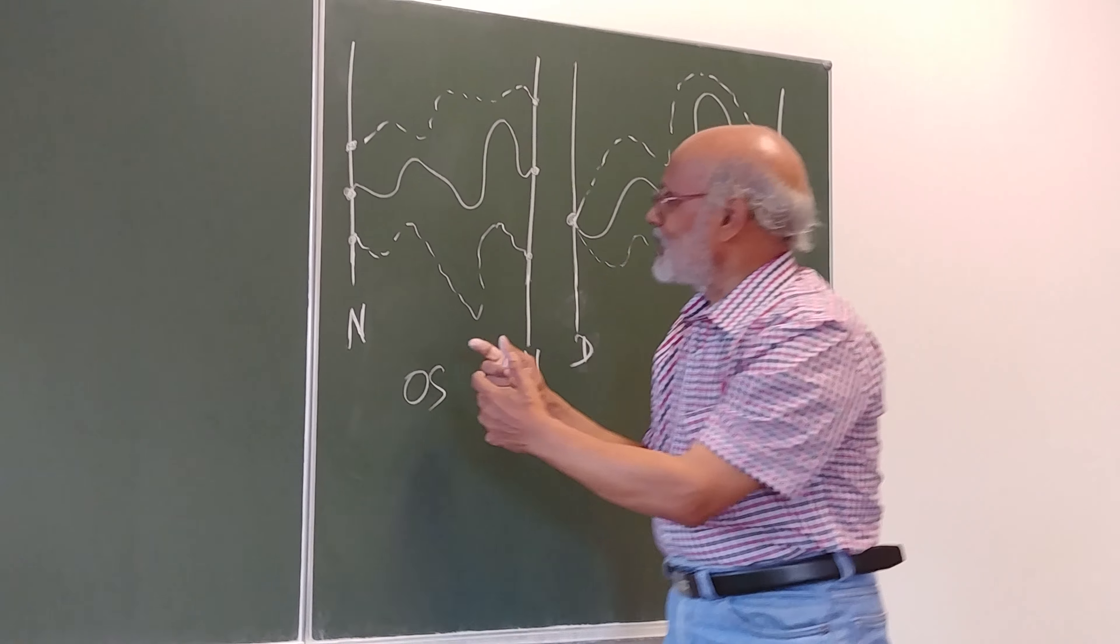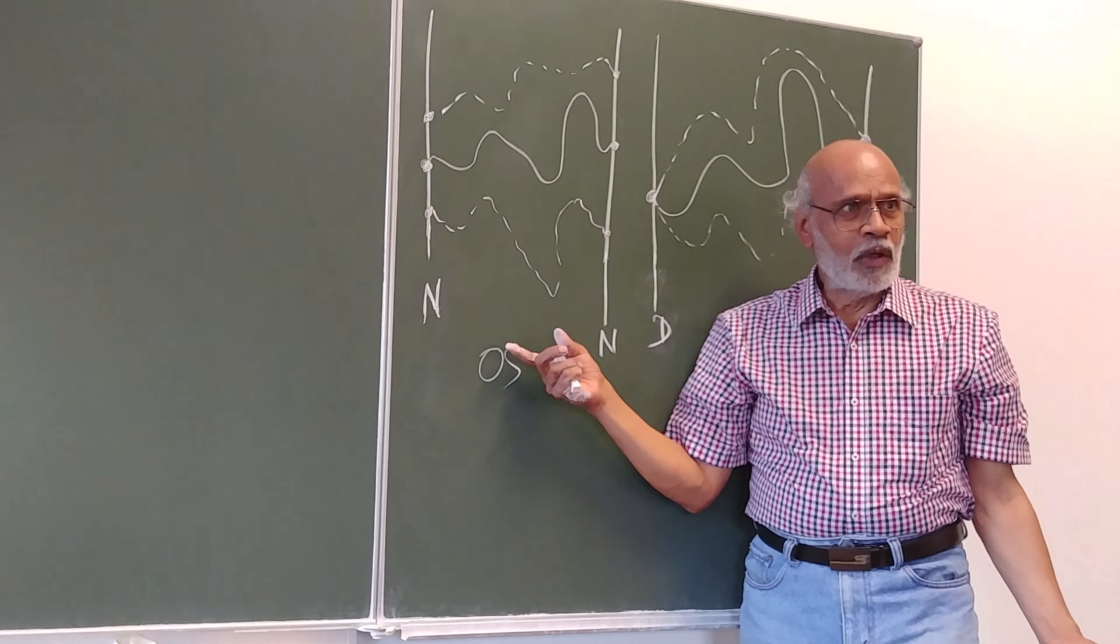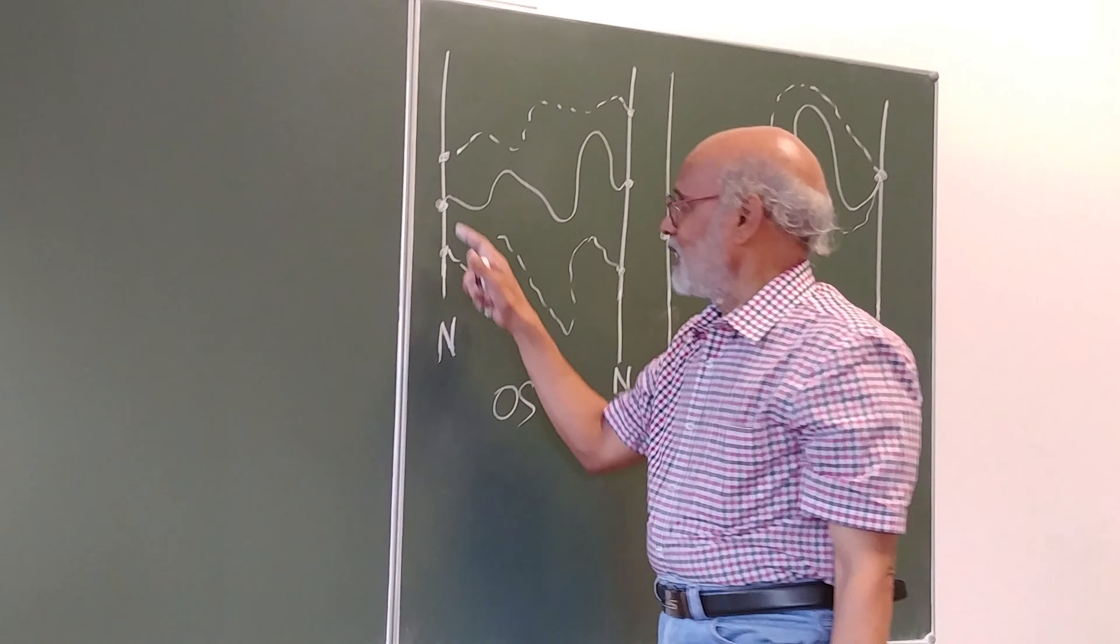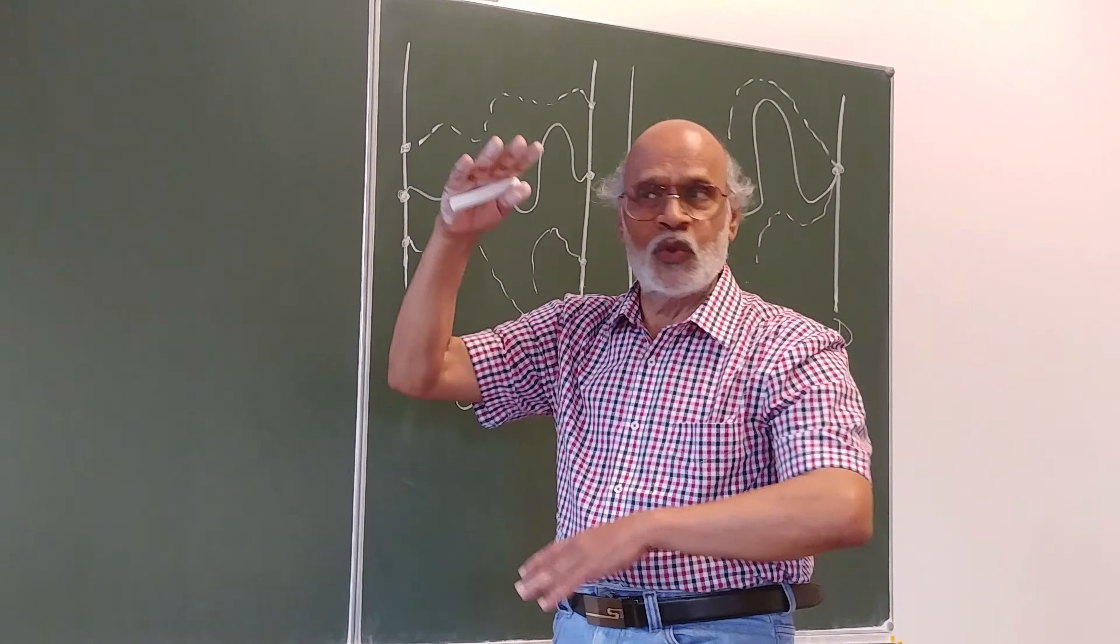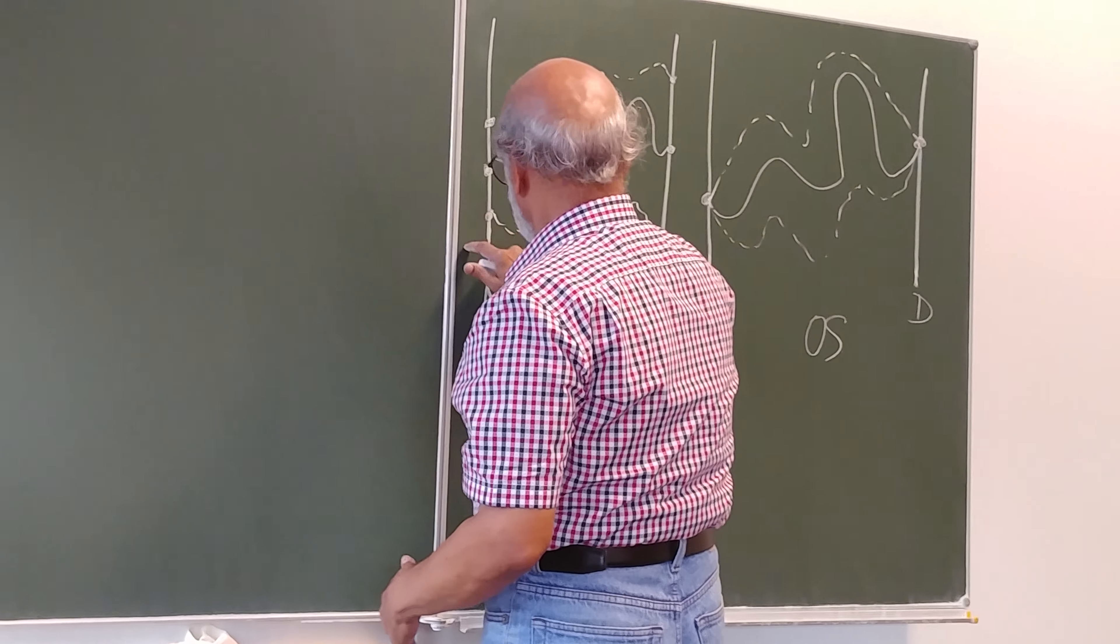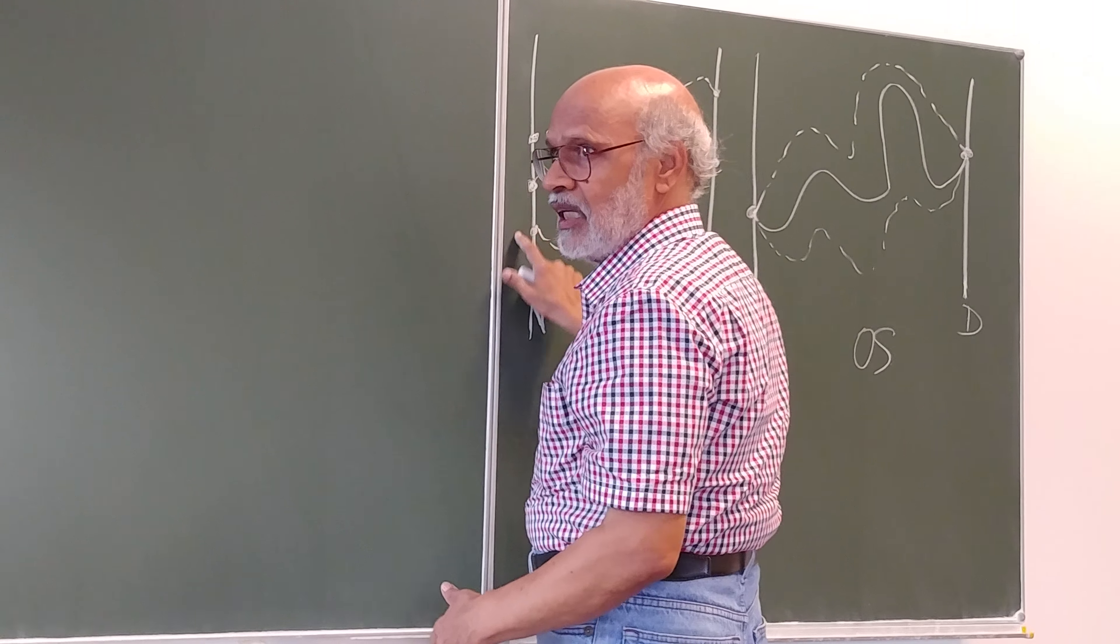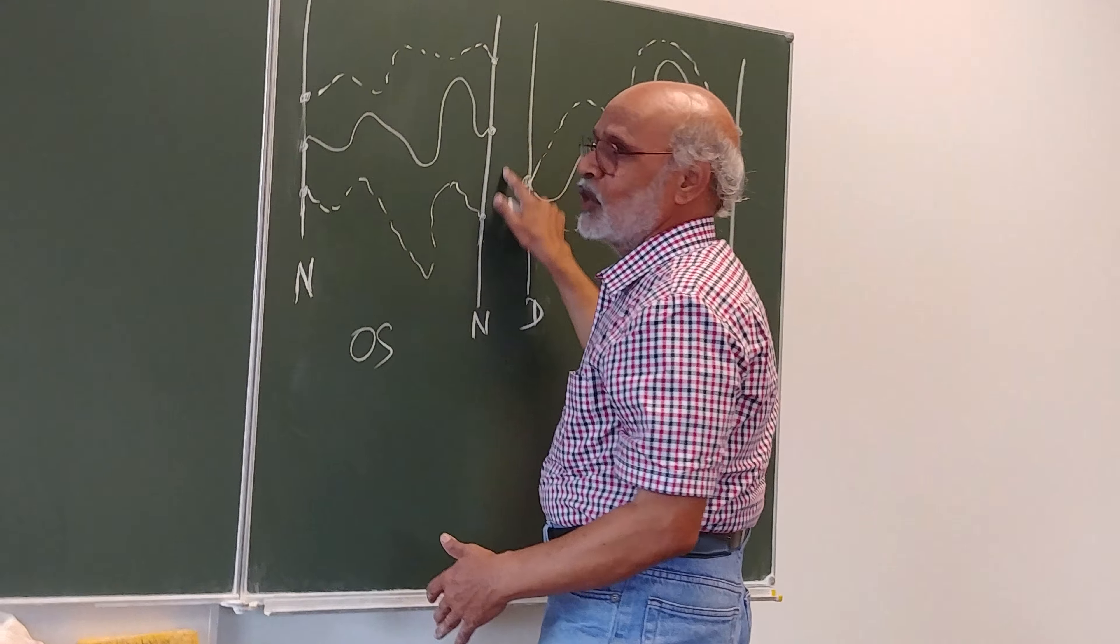This is what we would refer to as the Dirichlet boundary condition. And this is different one. Here, we call it Neumann boundary conditions. Here, the ends are not fixed at a point. They can fluctuate. They can move around. So, here, delta x is not 0. Here, also, delta x is not 0.